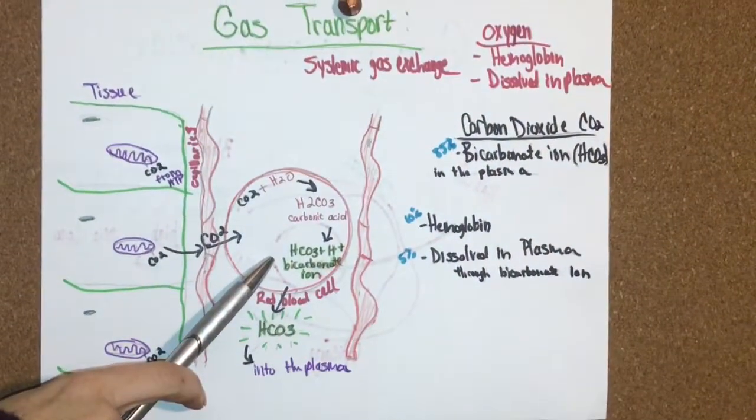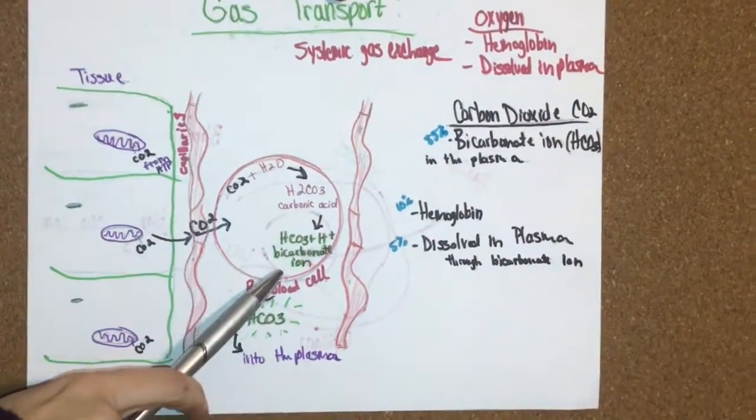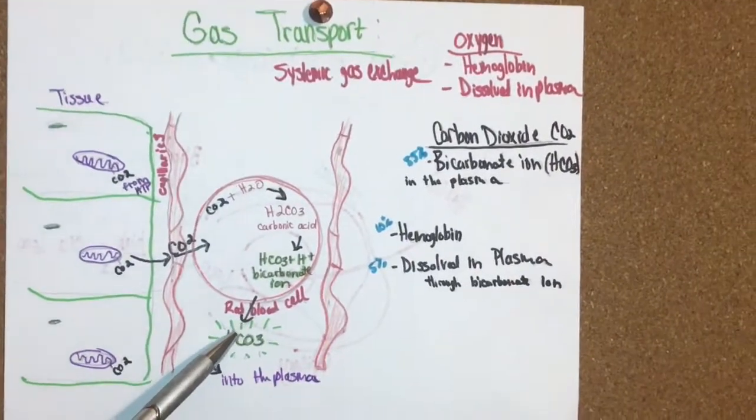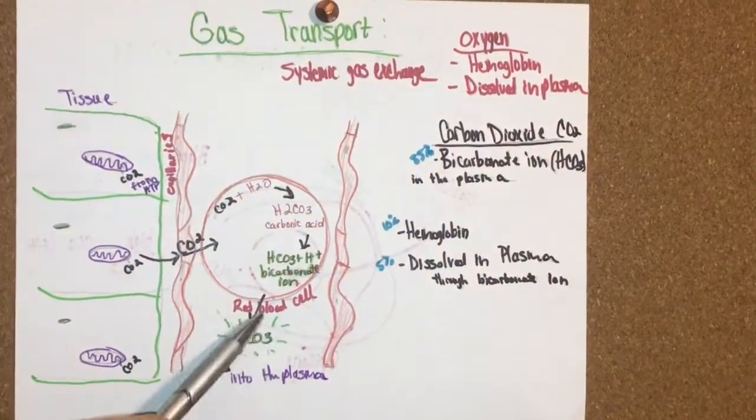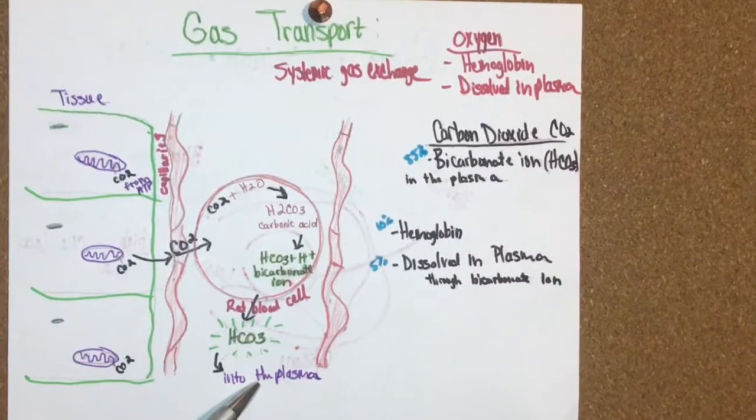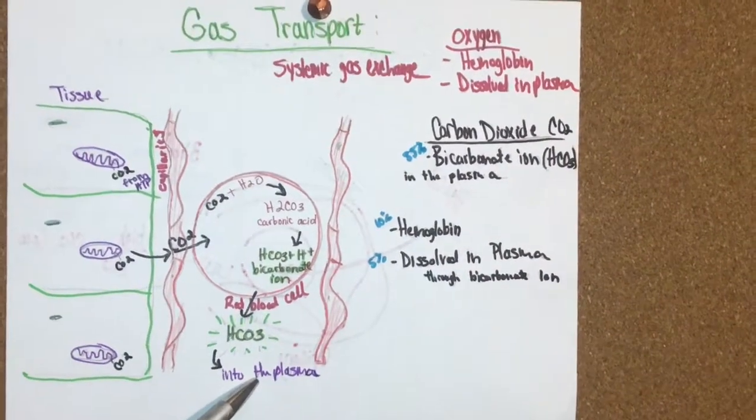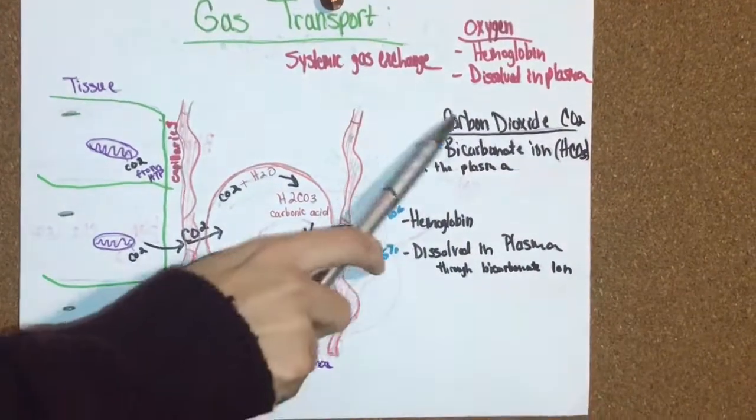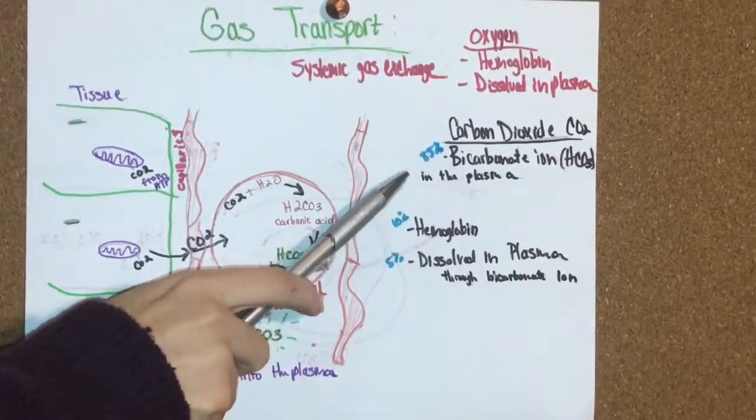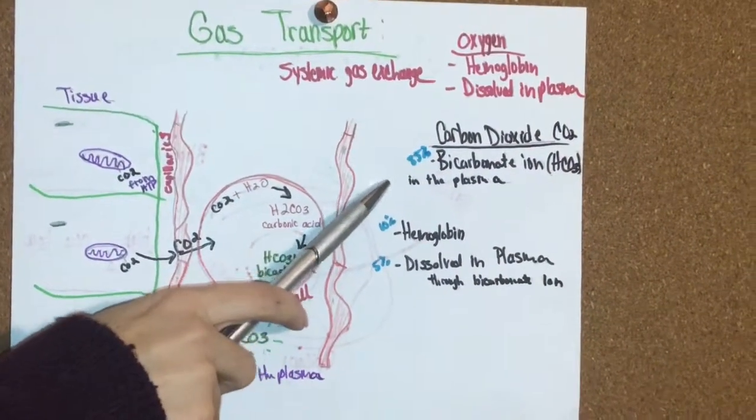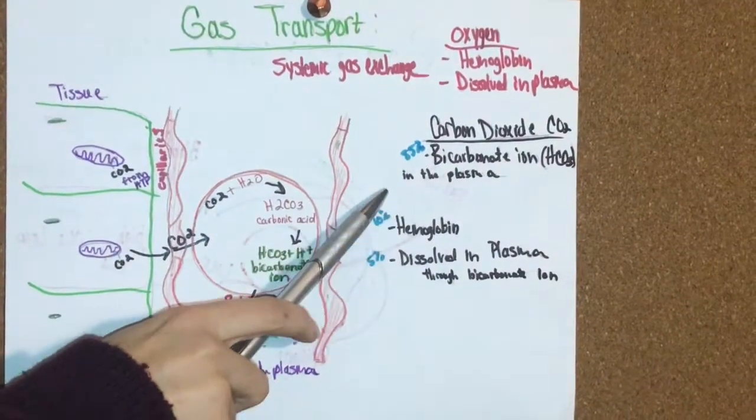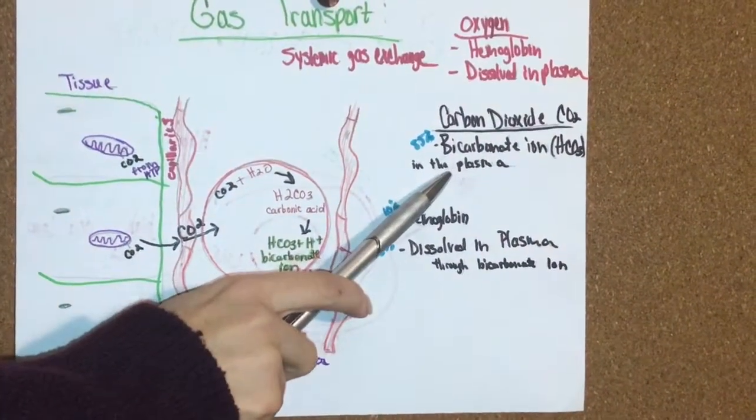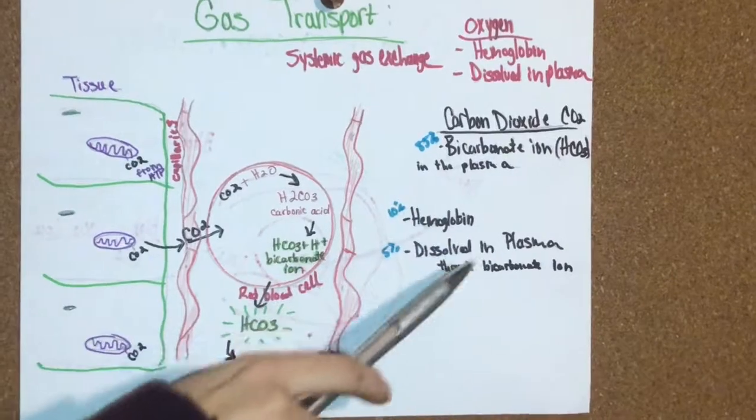The bicarbonate ion then, at that point, can travel into the plasma. When carbon is released from the tissue, it can bind another way. That's how most of the gas transport is transported through the bicarbonate ion.